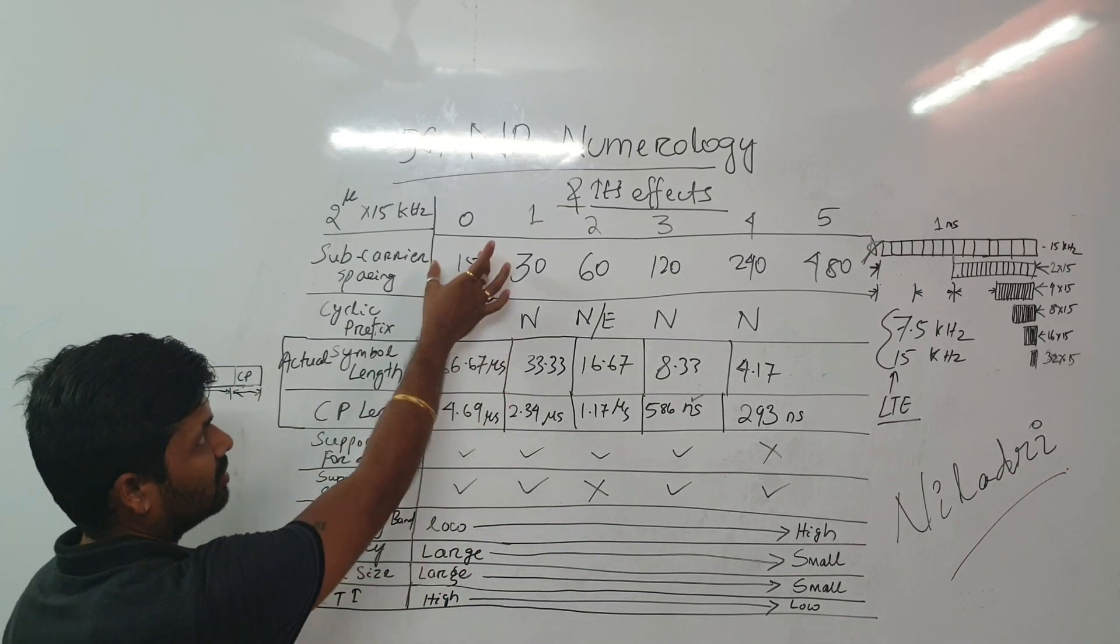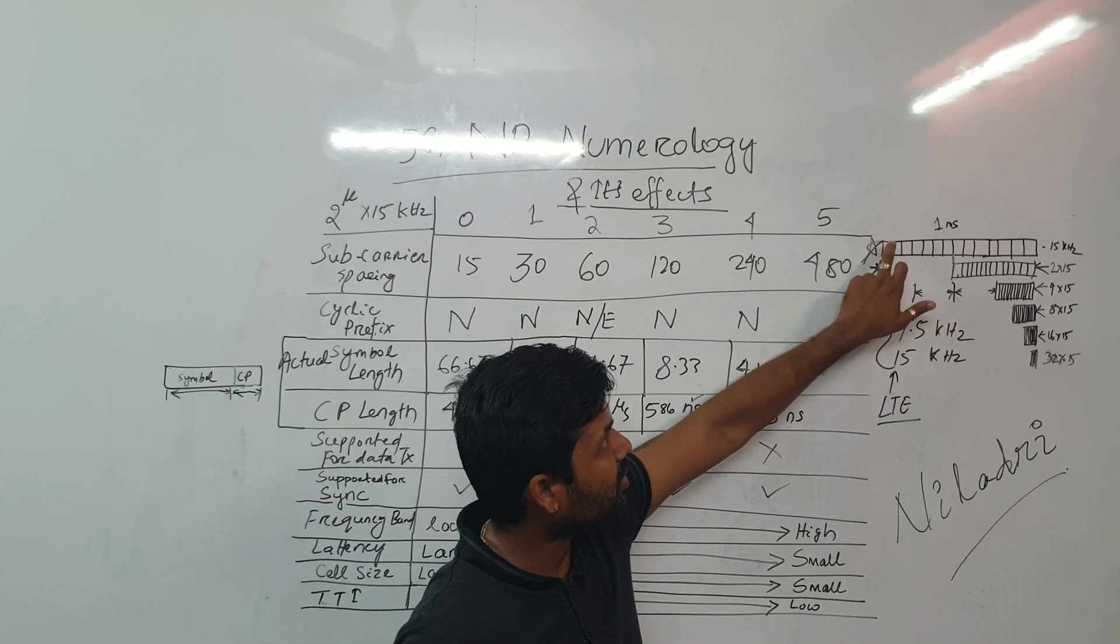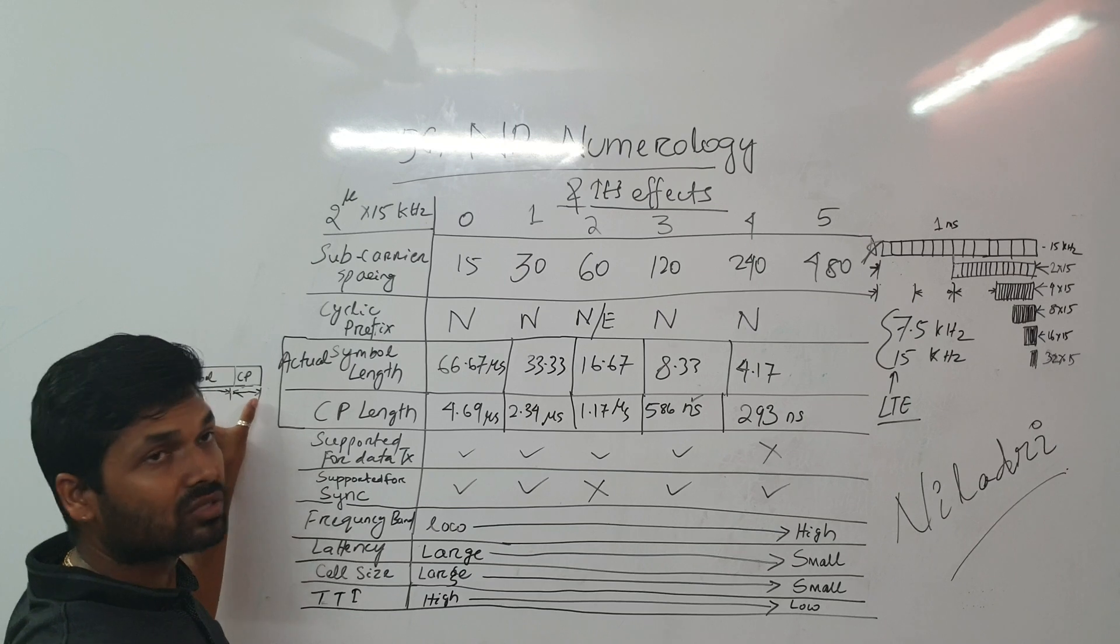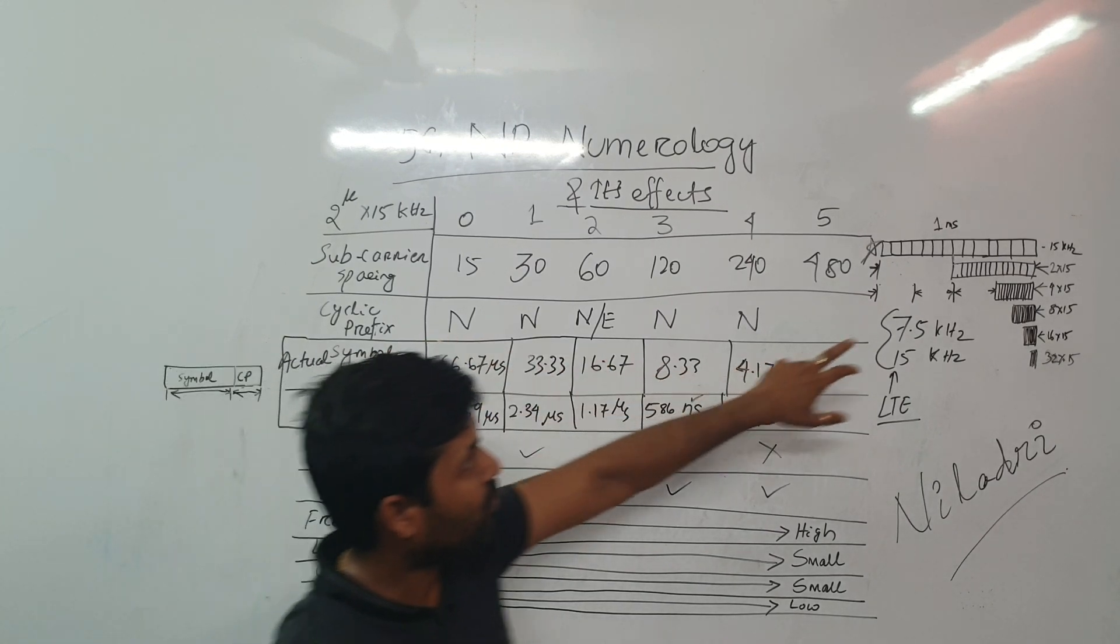So you can see, in the 15 kilohertz, if I take this one as an example, so this particular symbol is combined with symbol and cyclic prefix and the timings are this.